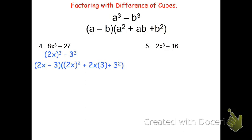Now simplifying this, I'm going to have (2x - 3), and in the next parenthesis, (2x)² is going to become 4x², the 2x times 3 is 6x, and then the last piece is 9. So I'll get (2x - 3)(4x² + 6x + 9).